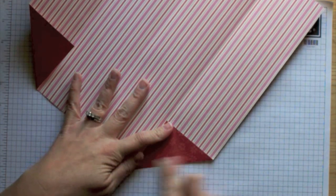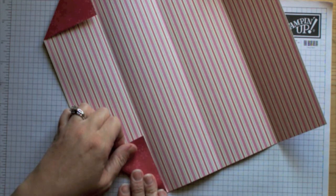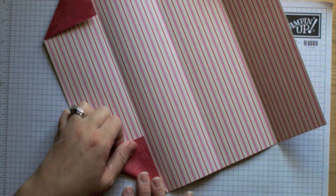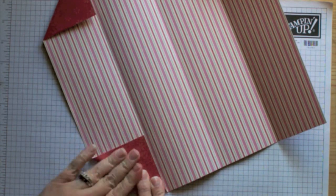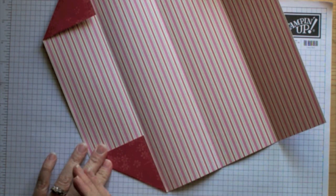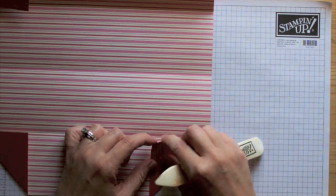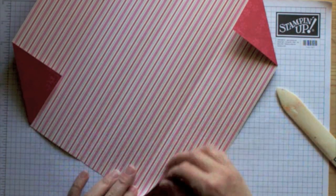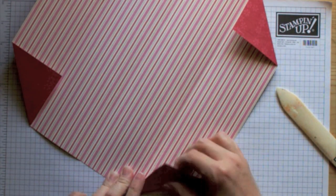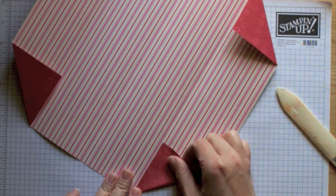These are going to actually help make your pockets. Remember you want to stay towards the left of that score line. You don't want to go over it, because when you fold your paper, this little side right here is going to bend up. So you want to make sure when you fold, you're lining it up to the left or the right of your score line, depending on which side of the paper you're folding.